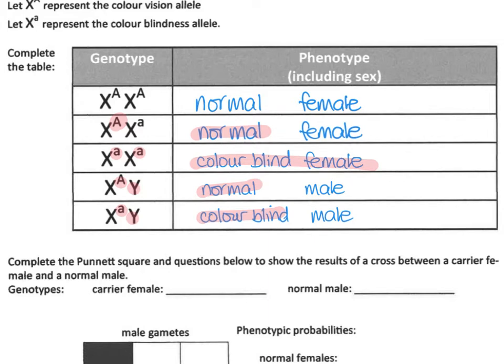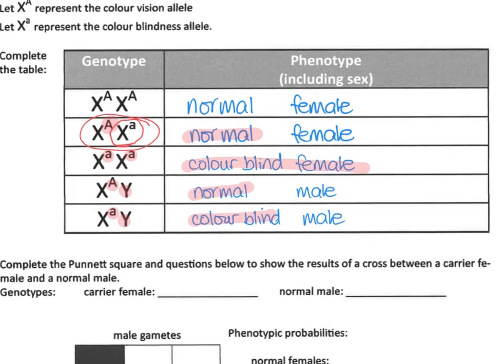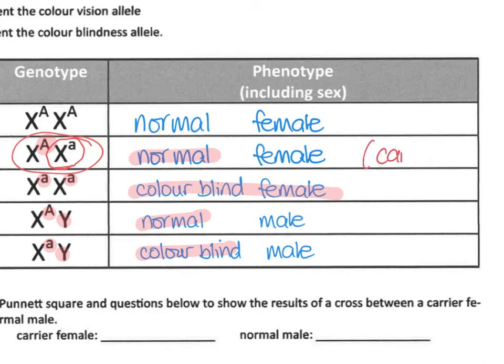This female genotype is normal in phenotype because she has a capital A, but she also carries the information for colour blindness and could pass it on to her offspring, potentially giving birth to a colour blind female or colour blind male. We say that she is a carrier. A carrier is someone who doesn't express the condition — she's not colour blind — but she has that allele present and can pass it on.